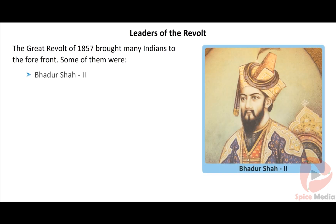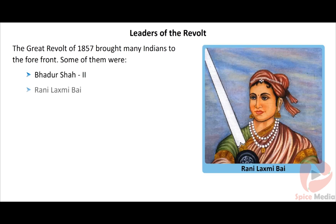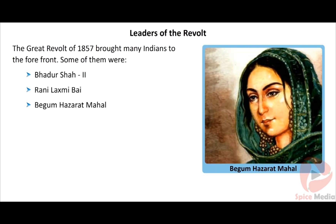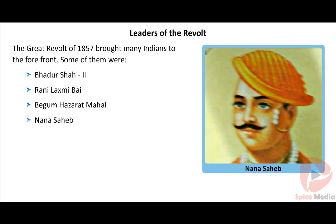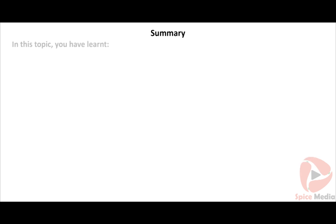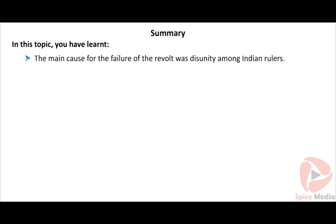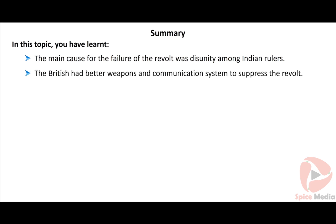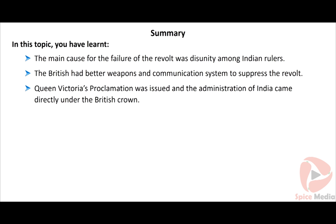The Great Revolt of 1857 brought many Indians to the forefront. Some of them were Bahadur Shah II, Rani Lakshmi Bai, Begum Hazrat Mahal, Nana Sahib, and Tantya Tope. In summary: the main cause for the failure of the revolt was disunity among Indian rulers. The British had better weapons and a superior communication system. Queen Victoria's Proclamation was issued and the administration of India came directly under the British Crown. Many Indian leaders sacrificed their lives during the revolt, and it was considered the first war of independence.